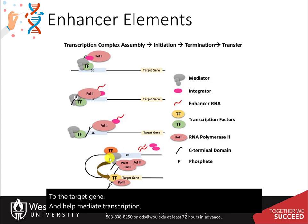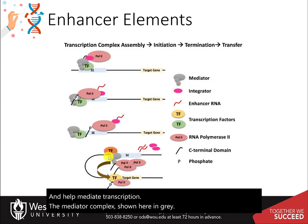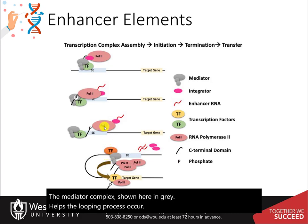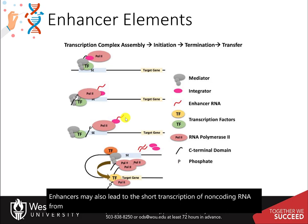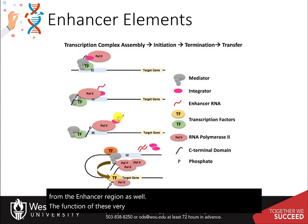The mediator complex, shown here in gray, helps the looping process occur. However, sometimes enhancers may also lead to the short transcription of non-coding RNA from the enhancer region as well. The function of these very short RNA molecules is currently not known.